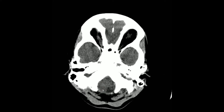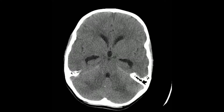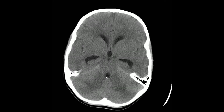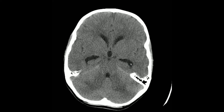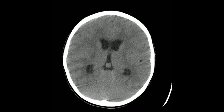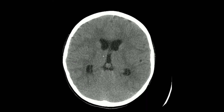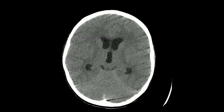At the foramen magnum, there also are findings of obstructive hydrocephalus with abnormal rounding of the temporal horns and more diffuse enlargement of the lateral ventricles and the third ventricle.